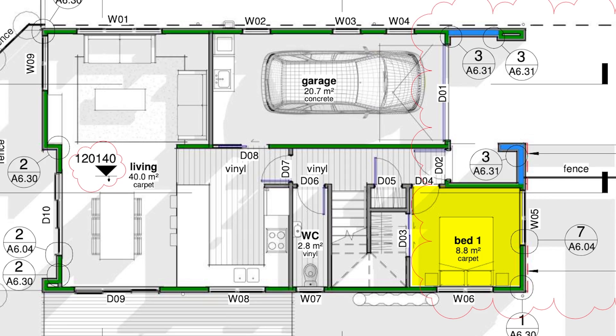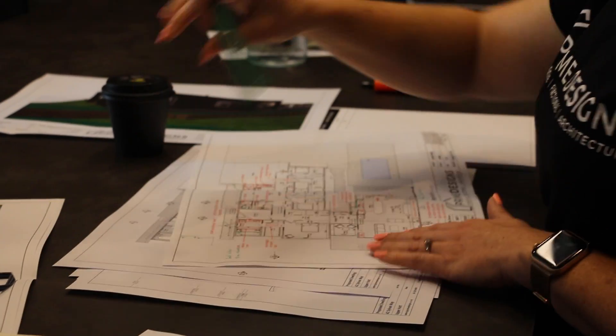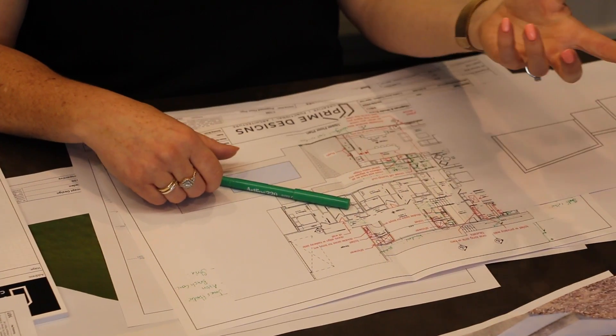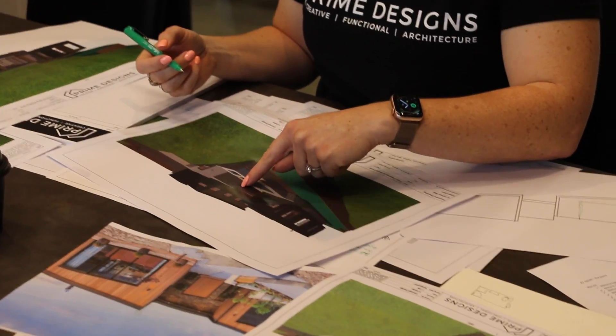Every design company lays out their plans slightly different and every council that approves plans wants them presented slightly differently. I personally think it's an area that could get streamlined where we could agree on one method that ticks the box for designers, builders and councils — but we don't. We have a bunch of different councils, a bunch of different designers, and the builder just has to work their way through them. This is also why we prefer to work with designers that we're familiar with — it means we're less likely to find little ticking time bombs in the plans.